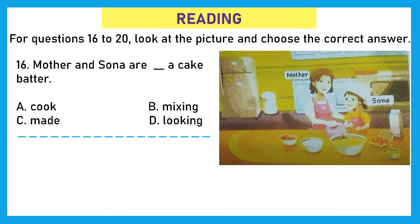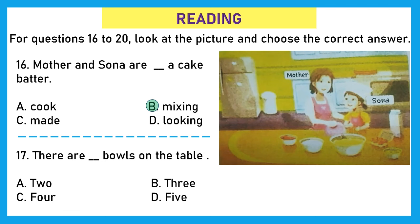Moving to the next section, that is of reading. For questions 16 to 20, look at the picture and choose the correct answer. The picture is depicting mother and Sona and they are trying to make a cake. Question 16. Mother and Sona are blank of cake batter. Cook, mixing, make, or looking. Can you see what are they doing? They are mixing a cake batter. Option B is the right answer. Question 17. There are blank bowls on the table. Let's count: one, two, three, and four. There are four bowls on the table.